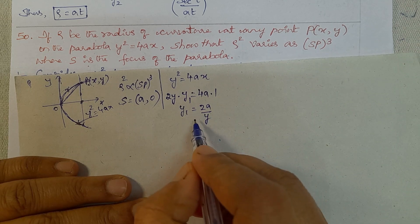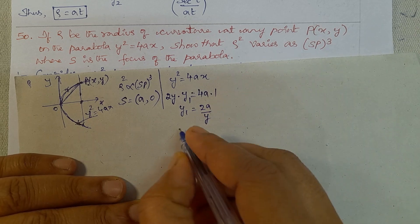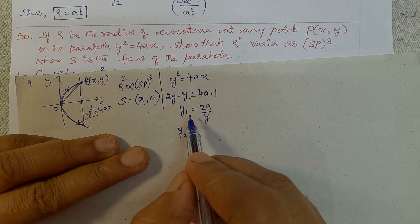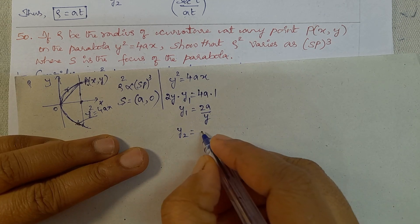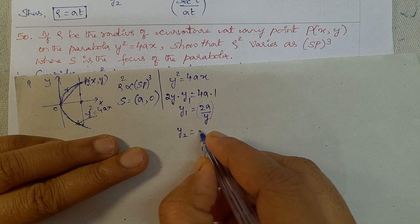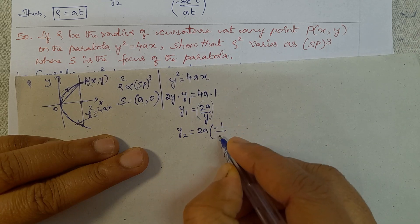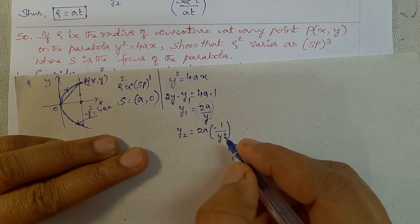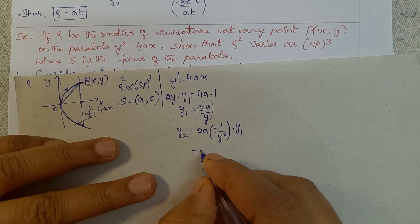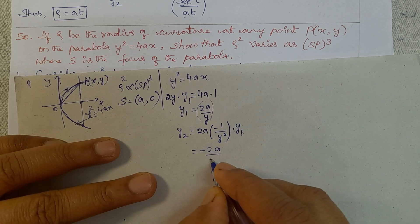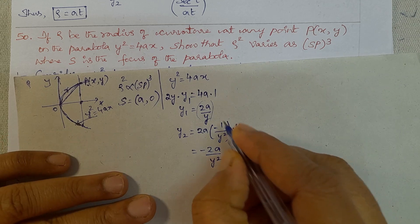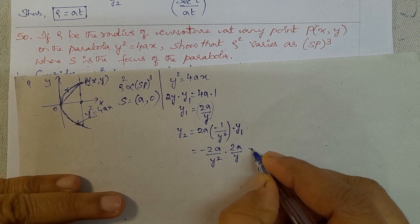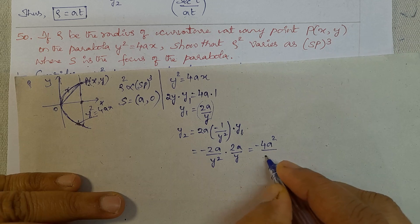Next, calculate y₂: differentiate y₁ = 2a/y with respect to x. So y₂ = 2a · (−1/y²) · (dy/dx) = 2a · (−1/y²) · (2a/y) = −4a² / y³.